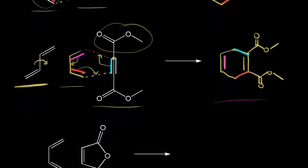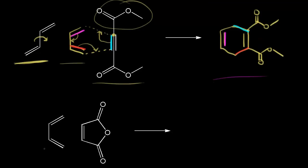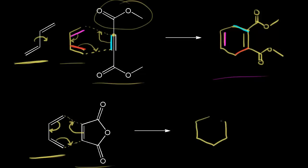Let's look at another Diels-Alder reaction. On the left we have our diene; on the right we have our dienophile. We already have an S-cis conformation, so we can start moving our electrons: these electrons into here to form a bond, then these pi electrons into here to form a bond, then these electrons as well. The product has this ring on the left, and then on the right we draw in the carbonyls. Following the electrons: red moved here, blue moved here, magenta moved here — six pi electrons moving at the same time.